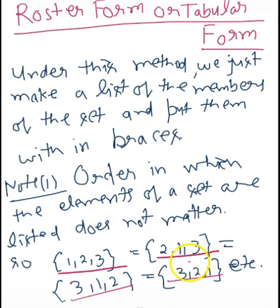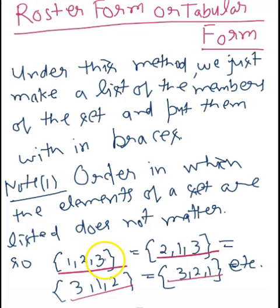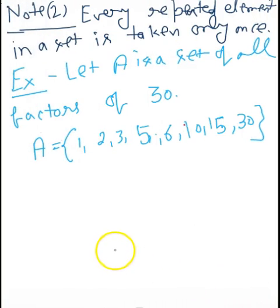If the same elements are present, there is no difference — those are the same set. A common practice is to put elements in increasing order, though there is no requirement. You can put the elements in any order, and all sets containing the same elements are the same set. This is the roster or tabular form.